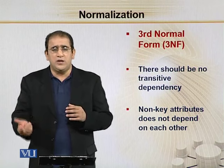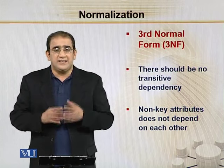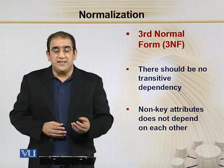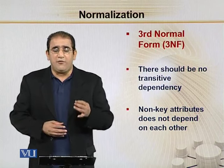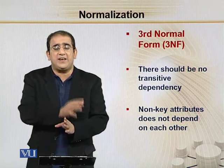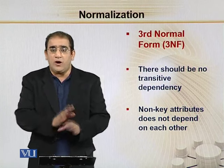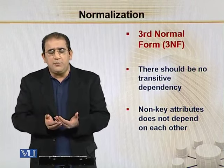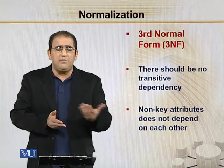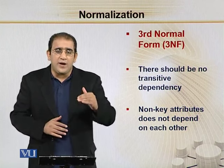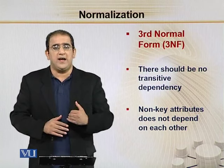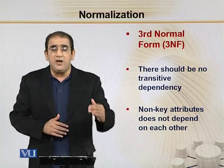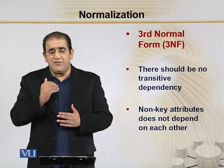Point number two: one non-key attribute being dependent on another non-key attribute does not mean that 2NF is over. This does not mean that the fully functional dependency on the key attribute or key attributes is gone — that is still present in its place. On top of it, non-key attributes are obviously dependent on the key attribute — that's why we are obeying the 2NF rules. We are following the 2NF rules to make sure that 3NF is also obeyed. So all the rules of 2NF are already being obeyed.